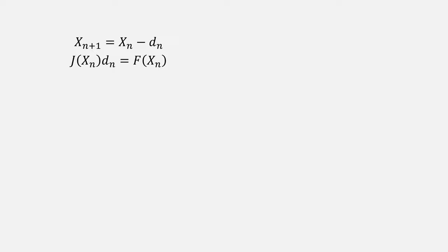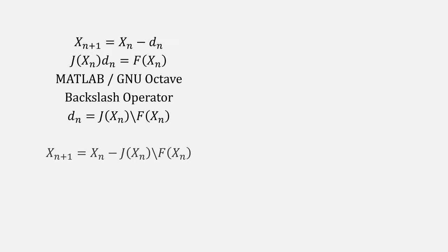Let's take a closer look at these two equations. If we're using MATLAB or GNU Octave, for example, you can use the backslash operator to rewrite our value for d like this, which simplifies our equation to eliminate a d variable. It still does solve a linear system each iteration.